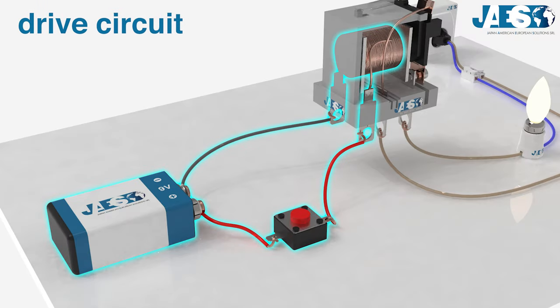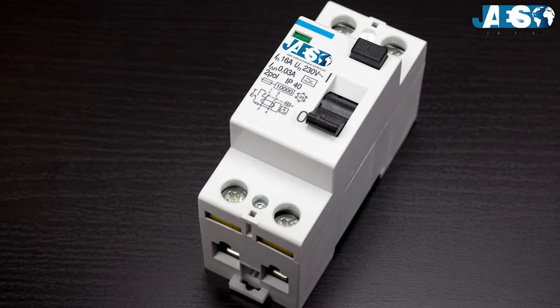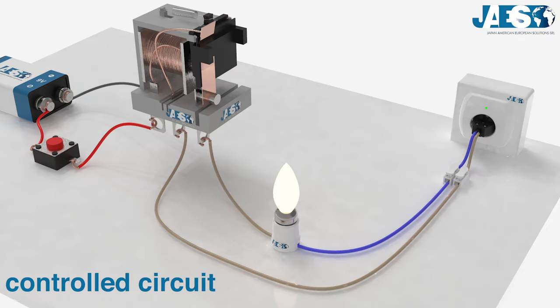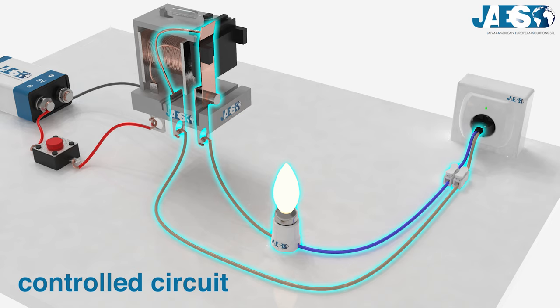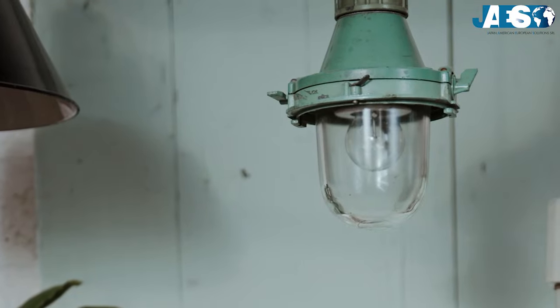The drive circuit can be closed by a simple manual switch, but also by various kinds of analog or electronic equipment. The controlled circuit, on the other hand, can power any kind of electrical device, from electrical motors to light bulbs.